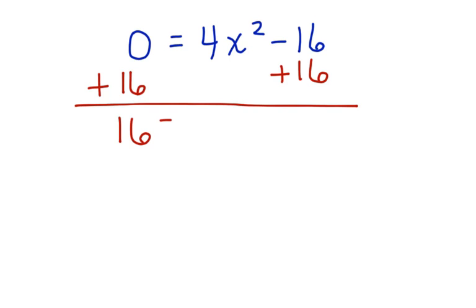Now we have 16 equals 4x squared. Our next step is to get x alone even more. So we're going to divide both sides of this equation by 4. 16 divided by 4 is 4. 4 is equal to x squared.